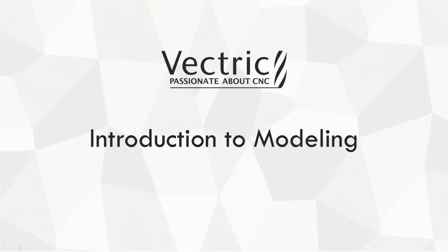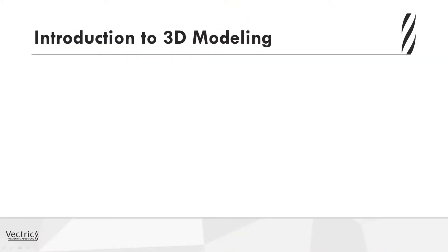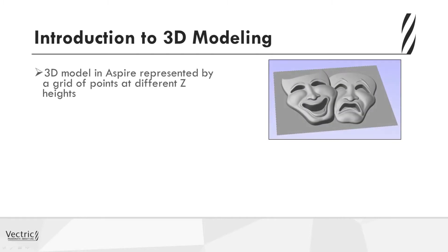In this video, we're going to look at an introduction of some of the concepts involved when you get into the 3D modeling side of the Aspire program. Firstly, let's talk about how we represent the 3D data. Essentially, what we're looking at is a grid of pixels and each one of these pixels is at a different Z height.